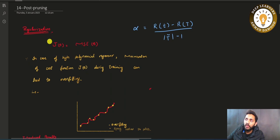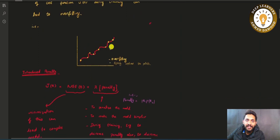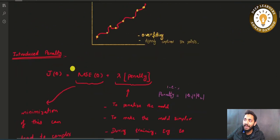In the case of regularization, before regularization our aim in linear regression training is to minimize the cost function — let's say J of theta — which is mean square error. When we have very high polynomial regression, minimization of that cost function during training can lead to overfitting, giving us a very tight model that captures training data points too closely.